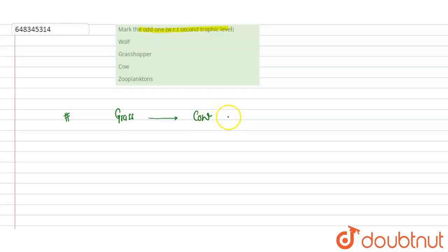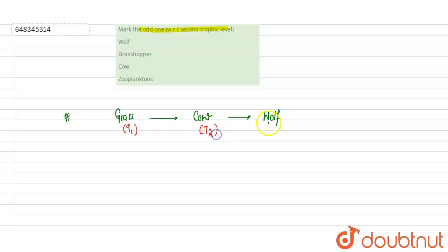Wolf then feeds on the cow, making it a secondary consumer. Looking at the trophic levels: grass is at the first trophic level as it is the producer, cow is the herbivore feeding on grass, and wolf feeding on the cow is at the third trophic level. So wolf is at the third trophic level.